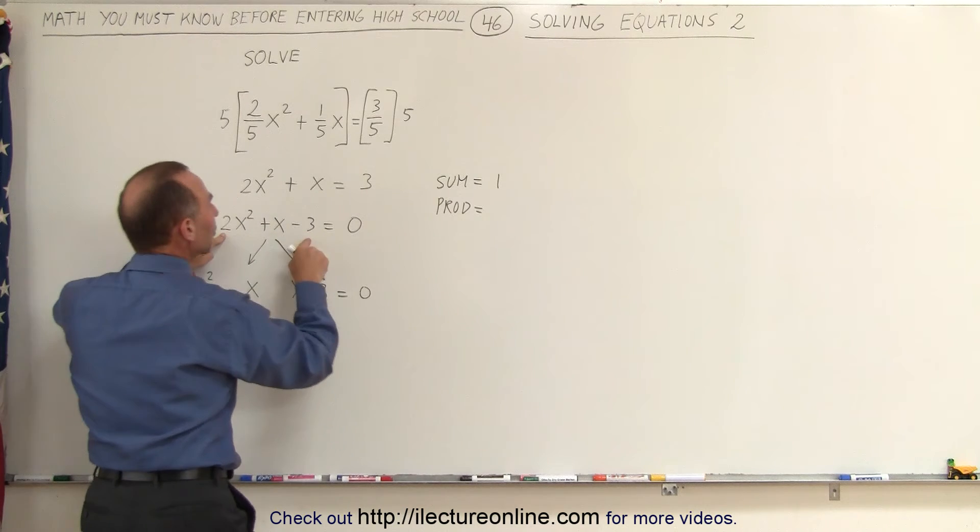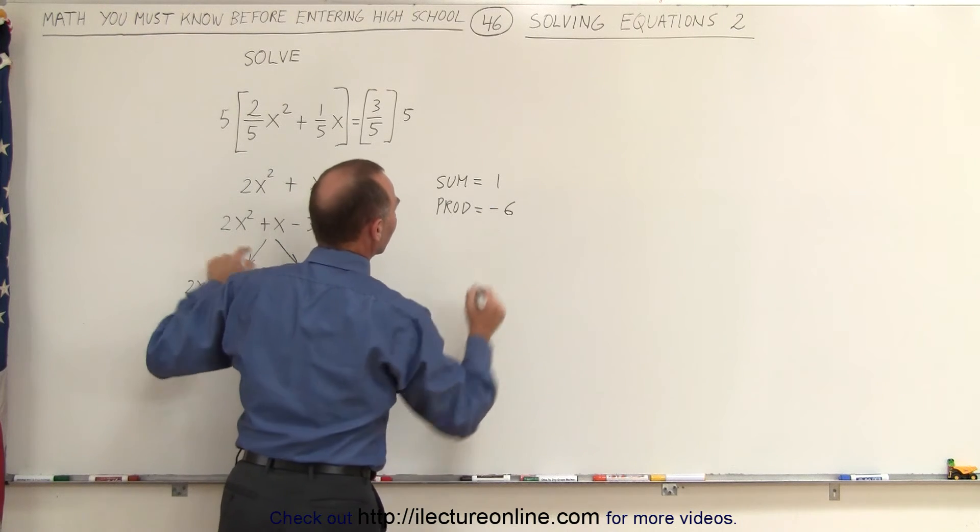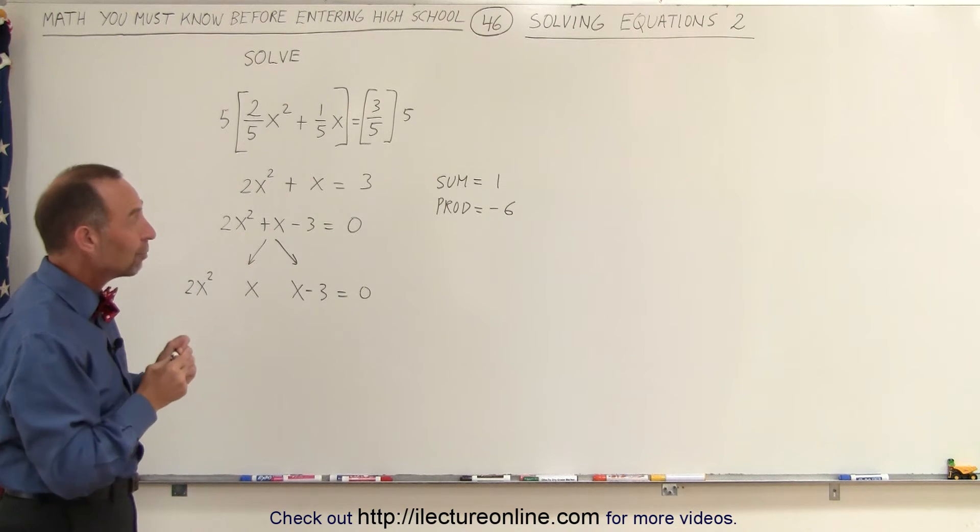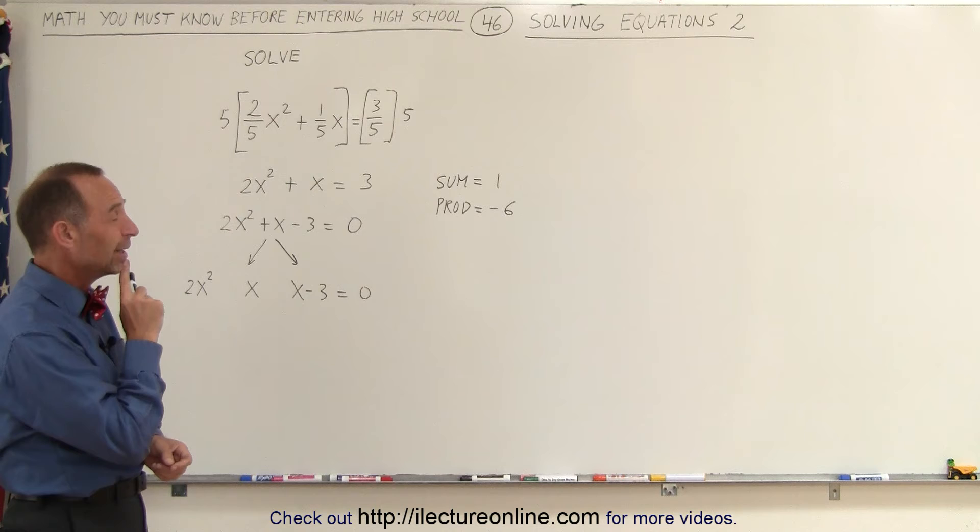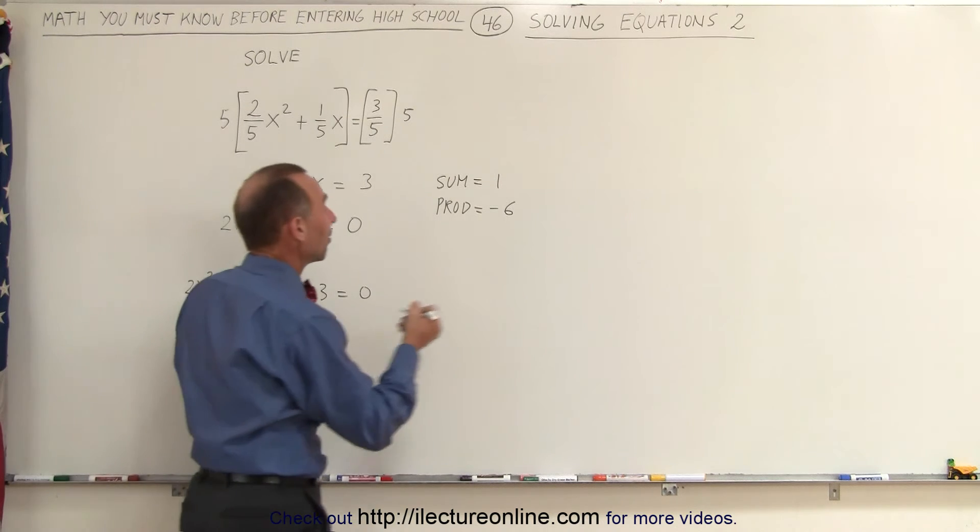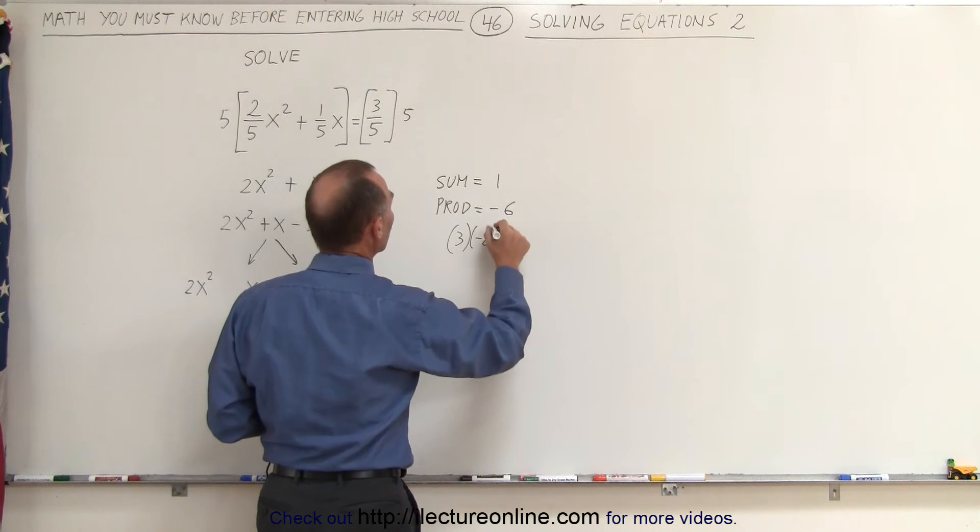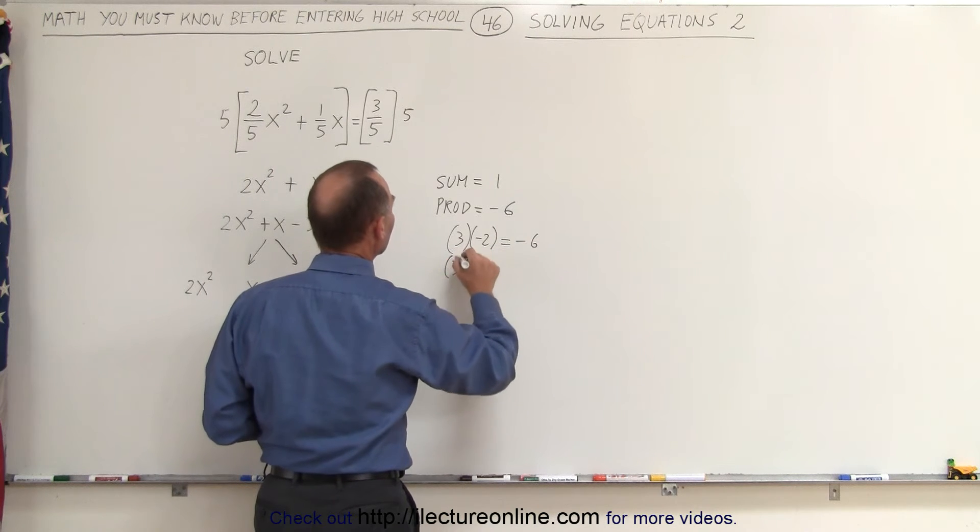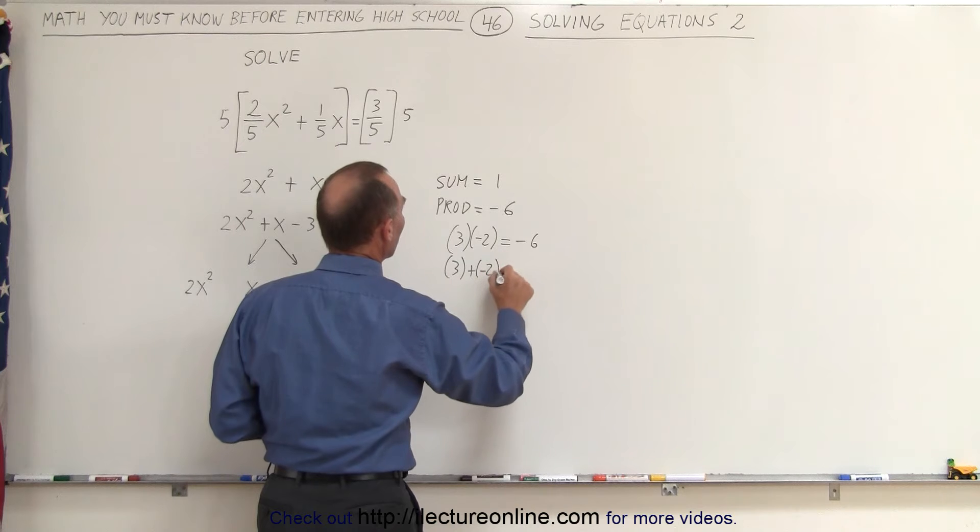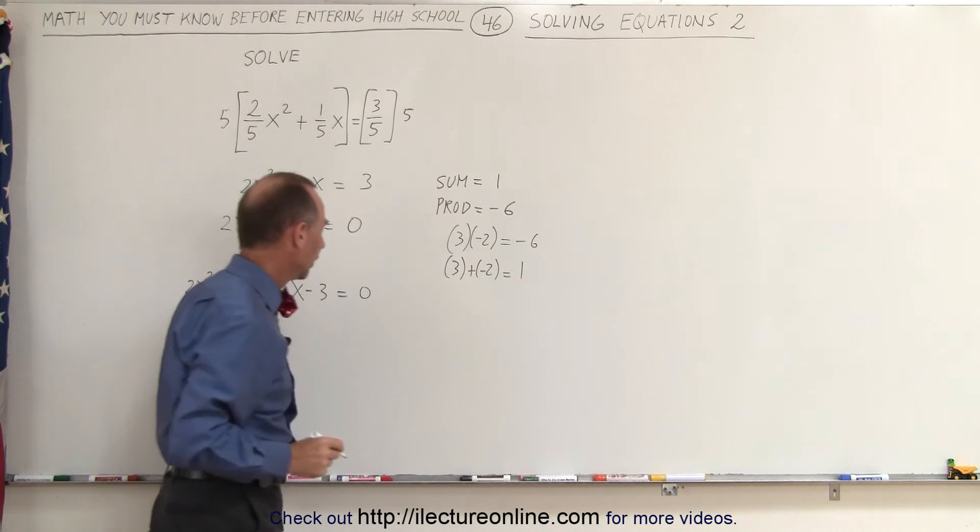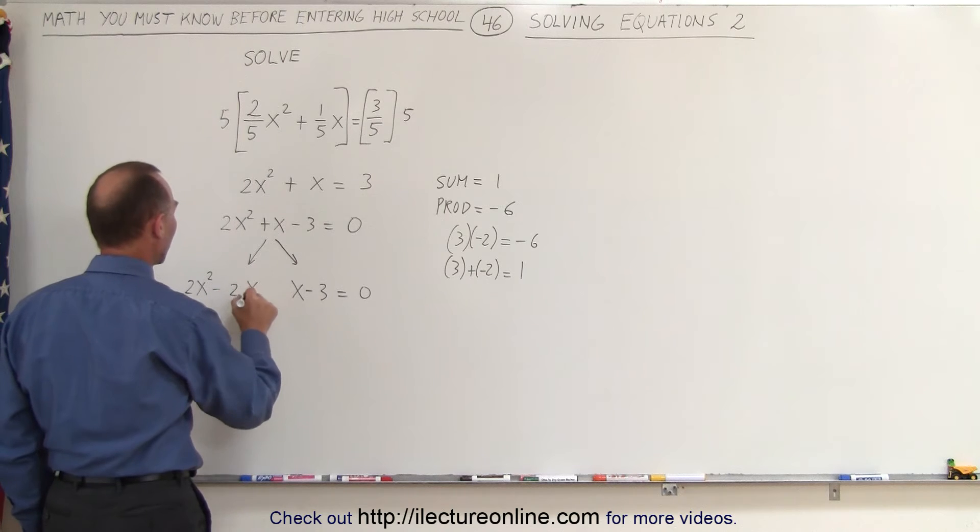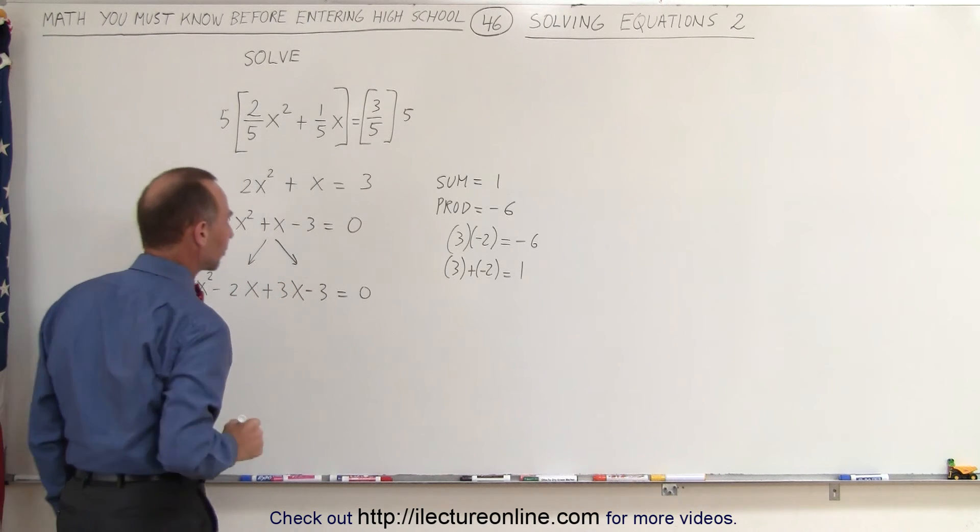So we're looking for two numbers such that when the product is minus 6 and the sum is 1, the two numbers would be a positive 3 and a minus 2. When you multiply them together, you get minus 6. When you add them together, 3 plus minus 2, you get a positive 1. That means we're going to write this as a minus 2x and a plus 3x.